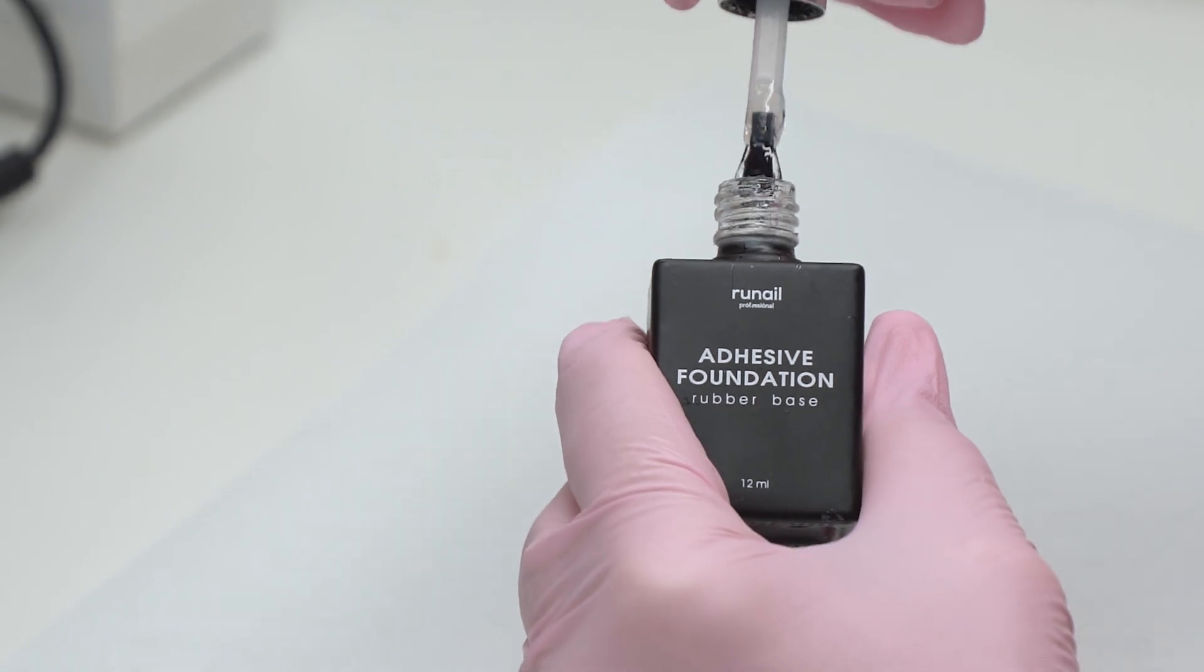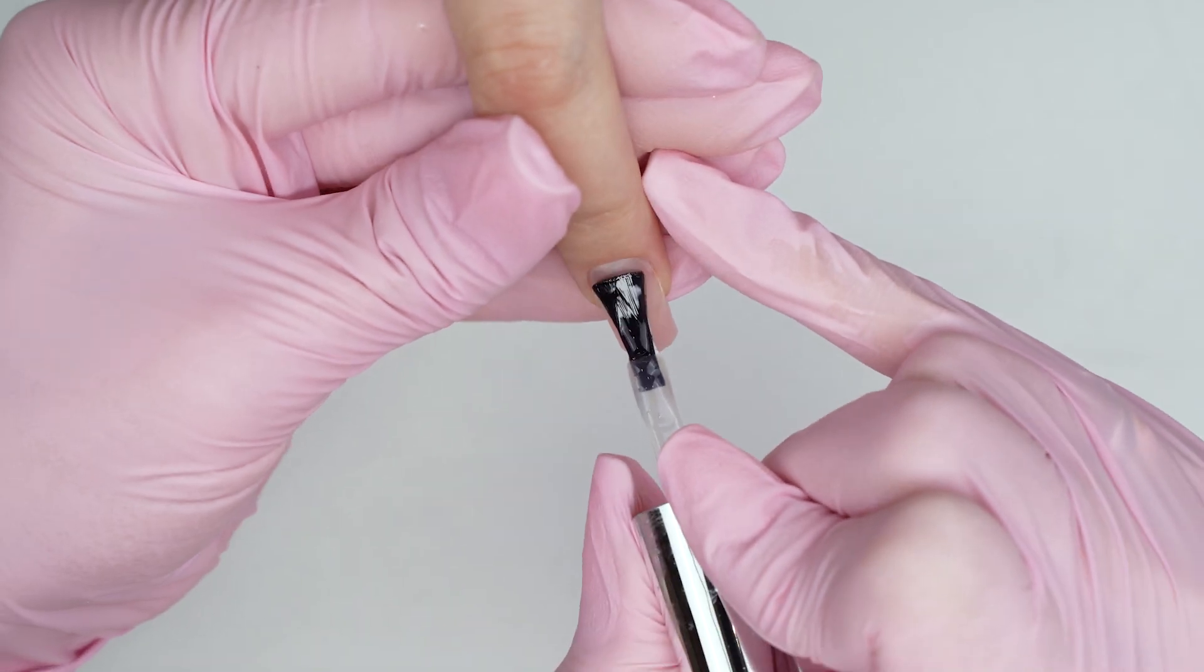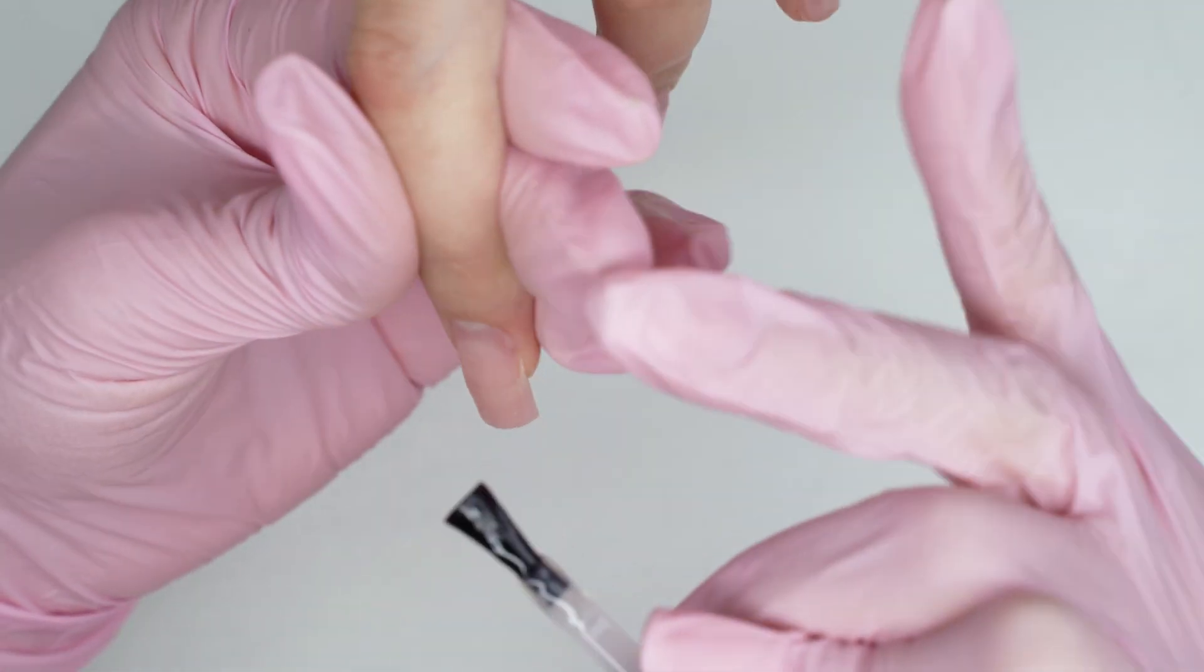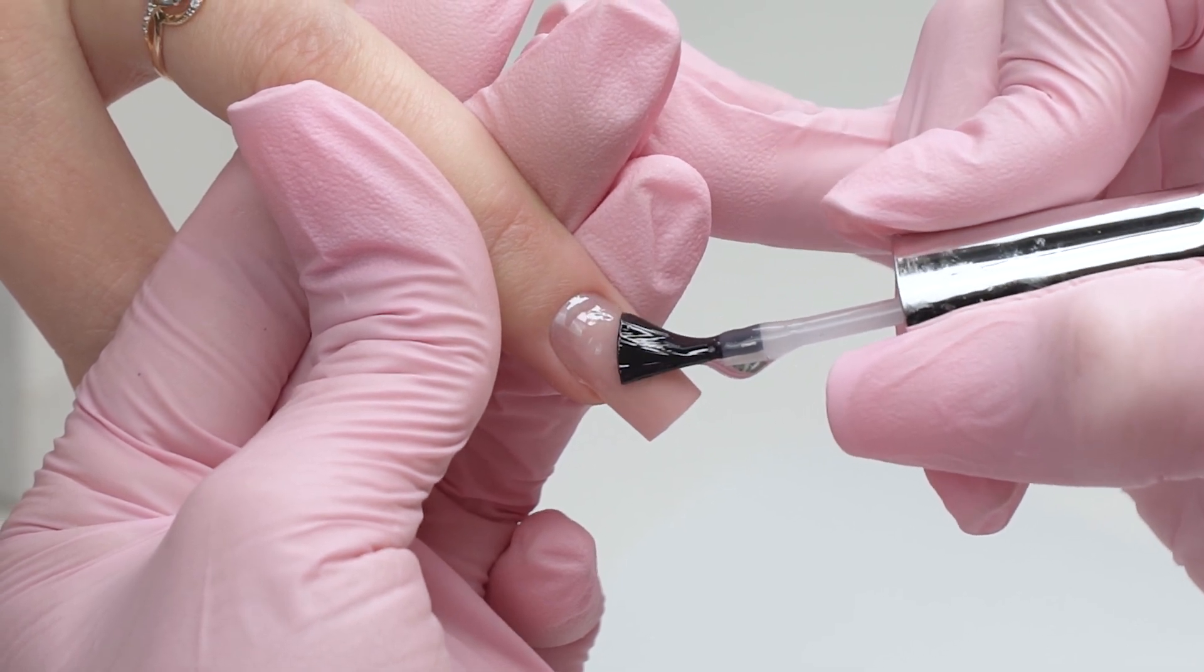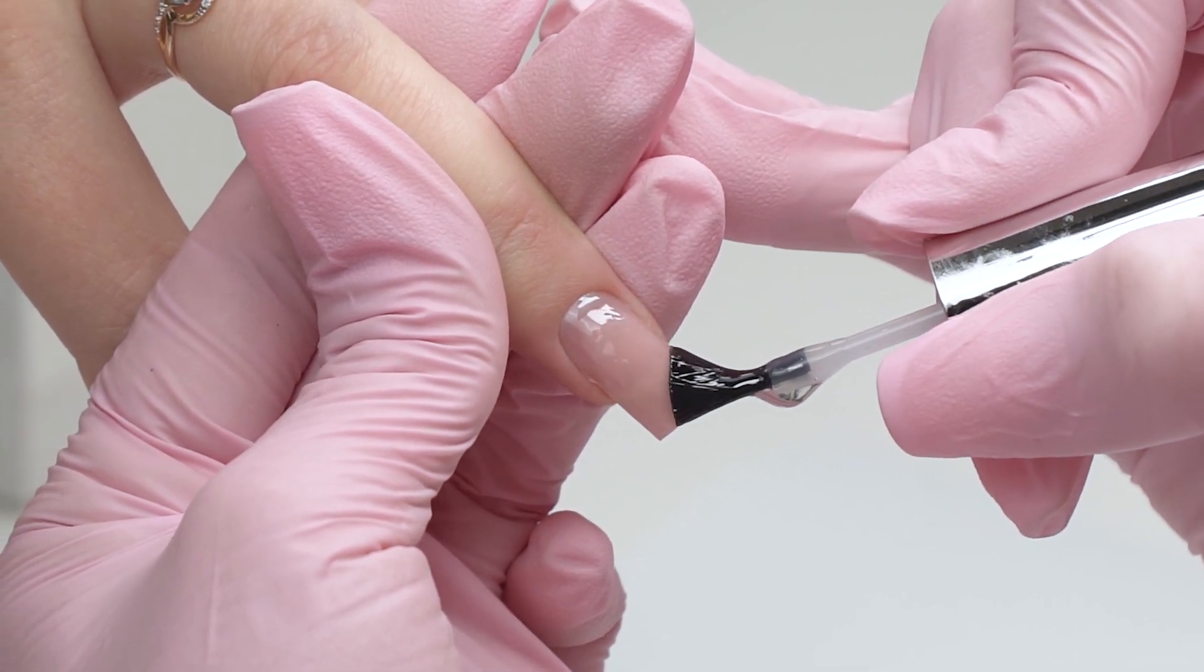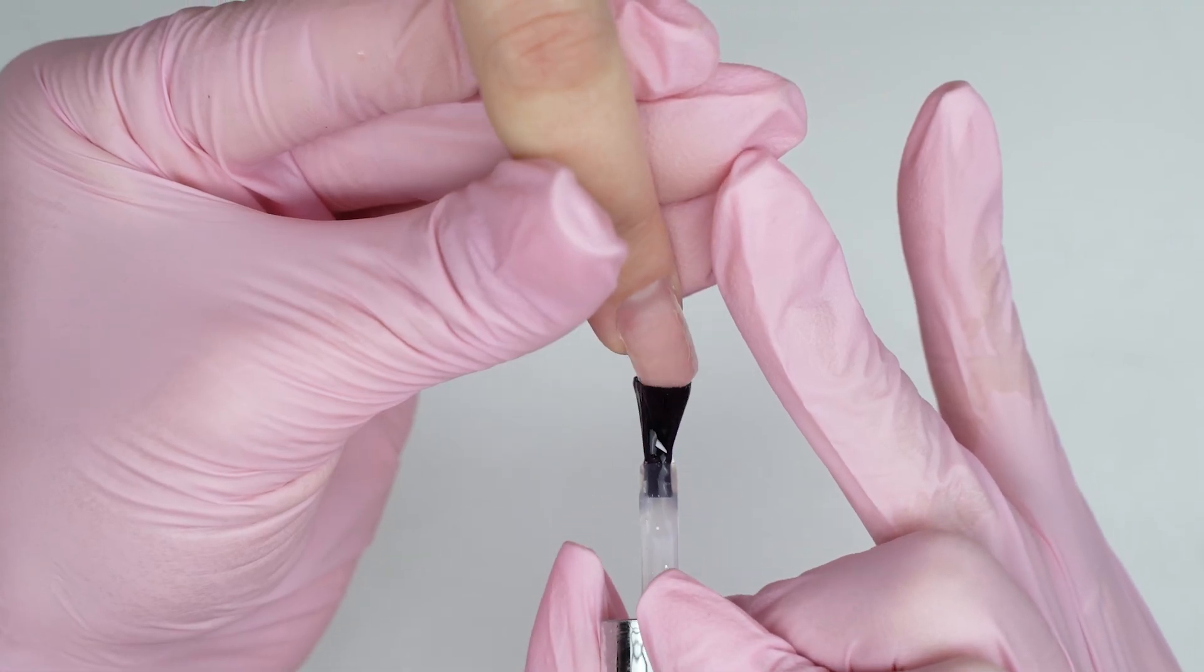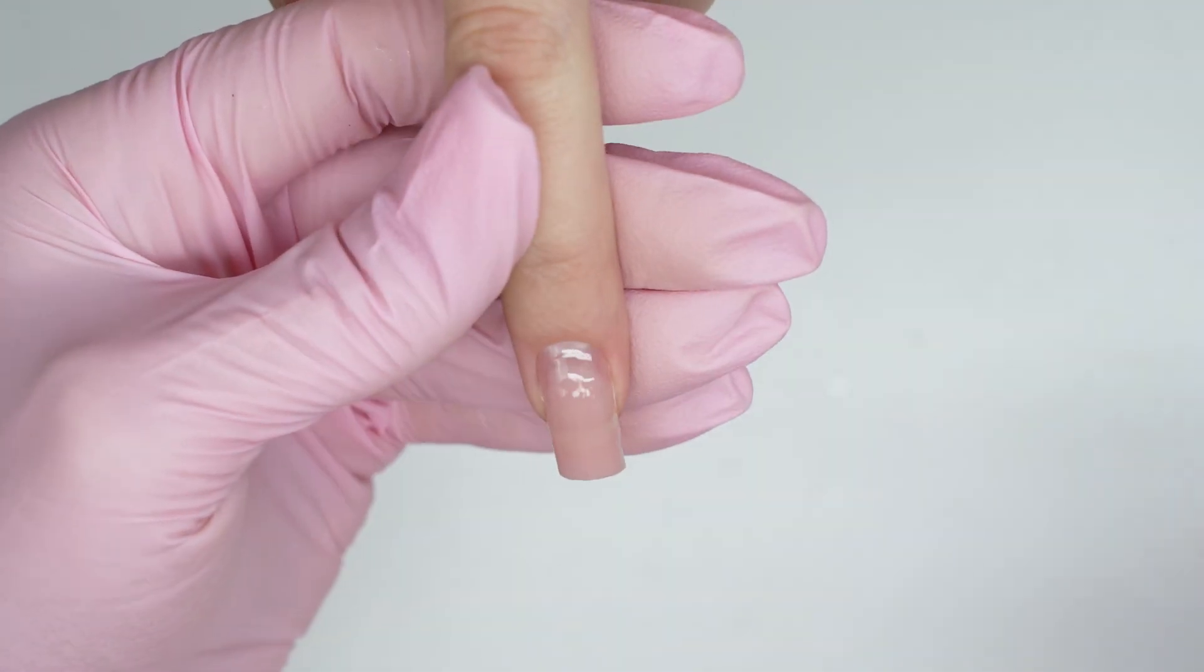Here comes a base coat. For gel nail strengthening, we can use a gel polish base or a solid gel base. Just make sure that it goes well with your gel. It's actually pretty common for a gel coating to peel off as the time goes by, just because it doesn't go well with the base coat. So there is no way to use such products together.